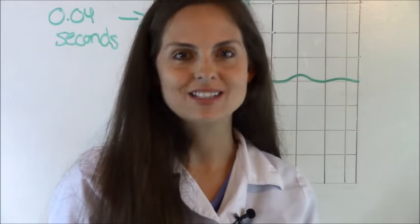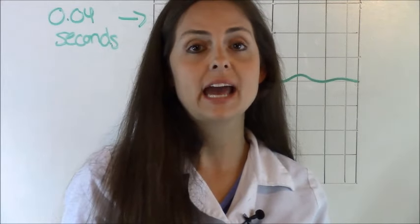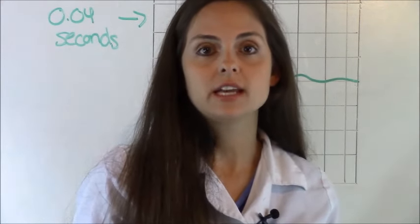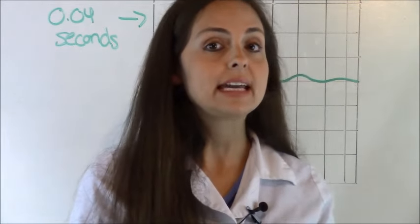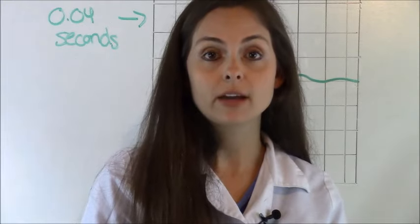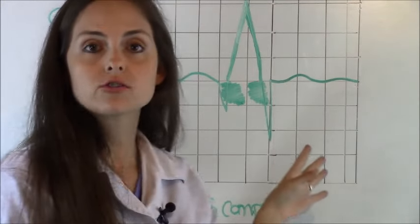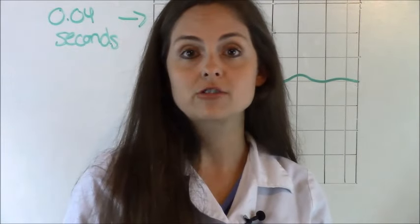So let's practice measuring a QRS complex. Behind me I have drawn a blown up version of what an EKG strip would look like. Like I said at the beginning of the video, you have the EKG and then behind it you have little squares. And so to make it easier for you to see on camera, I've blown it up. So behind me, these squares right here represent small squares because that's what we're looking for when we're measuring the QRS complex.